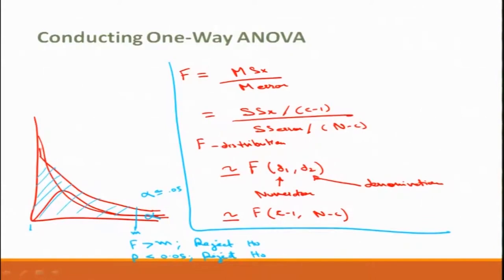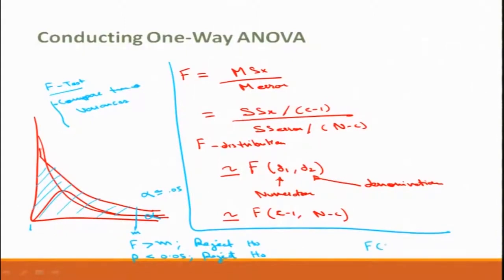F test is a catch-all term for any test using the F distribution. When people talk about the F test, they are usually talking about comparing two variances. Please note that F(2,5) is different from F(5,2) — the numerator degrees of freedom comes first and the denominator comes second. These are not equal.